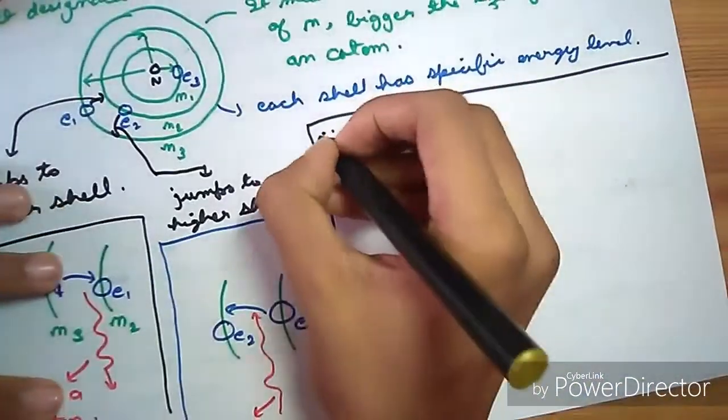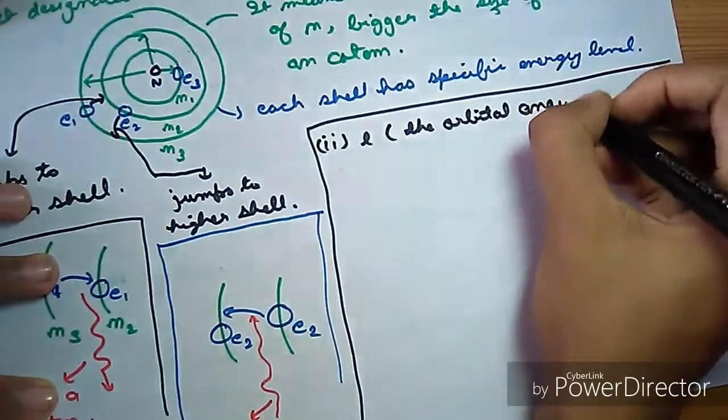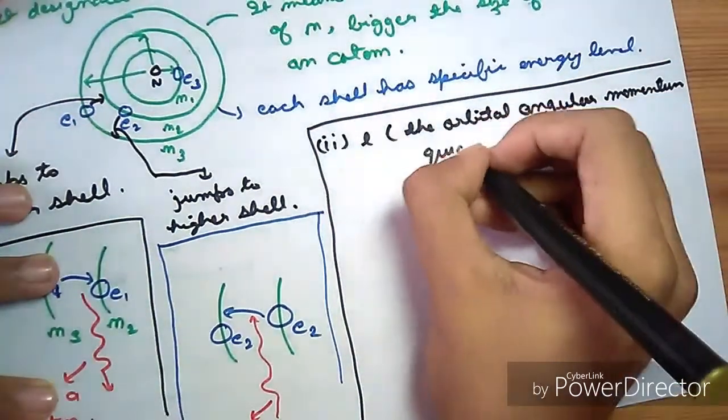Now the second one. Second one is L, the orbital angular momentum quantum number.